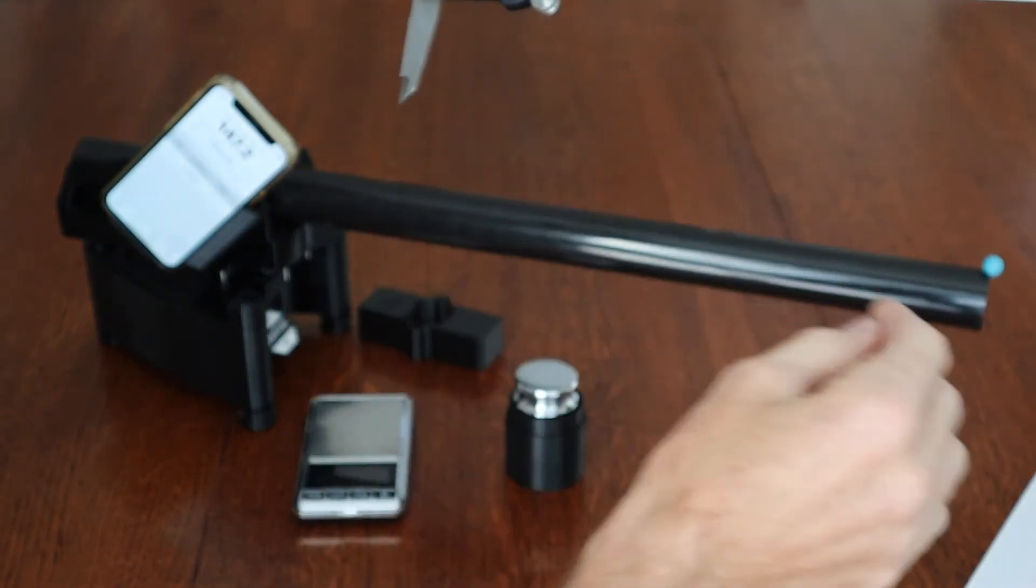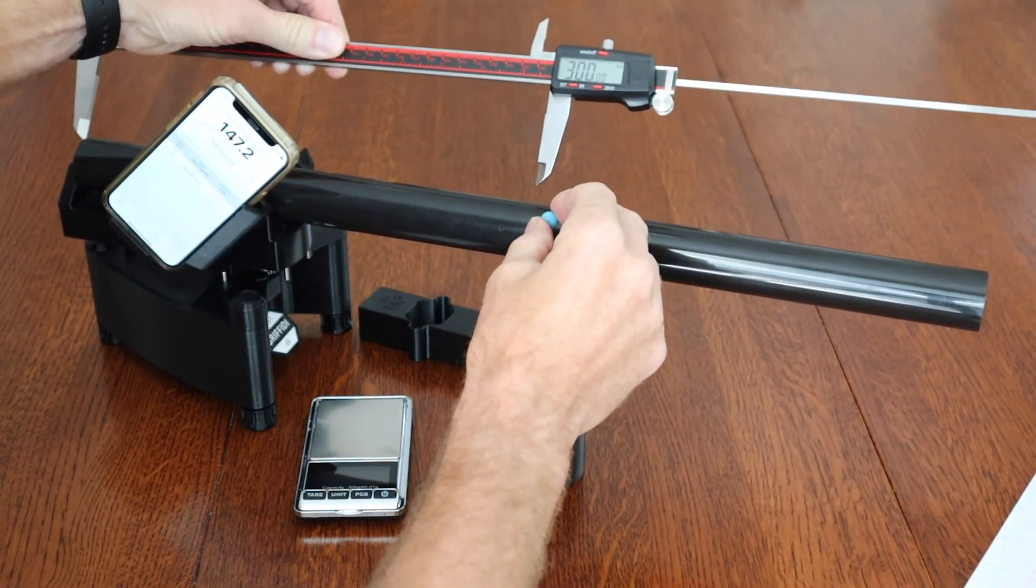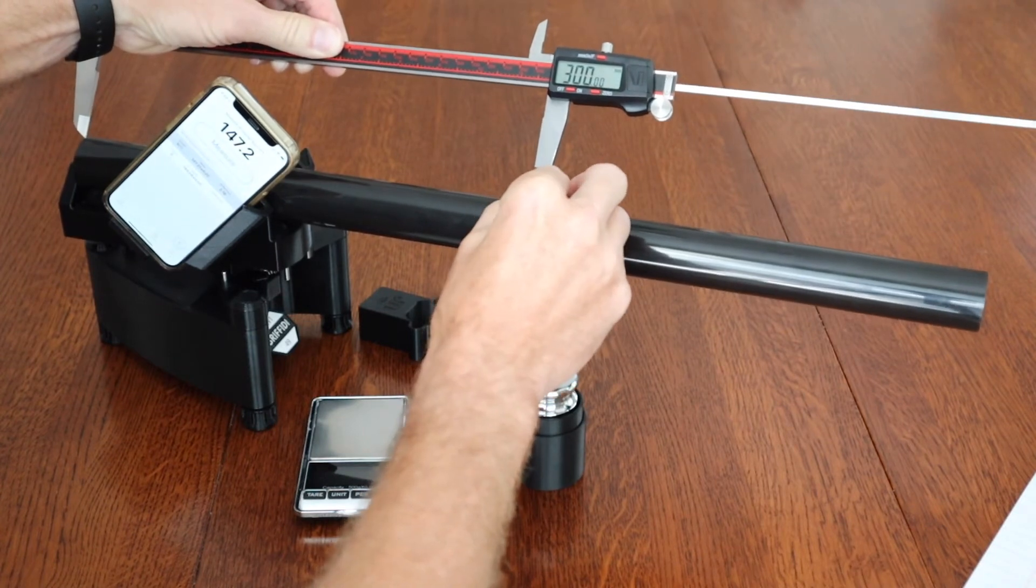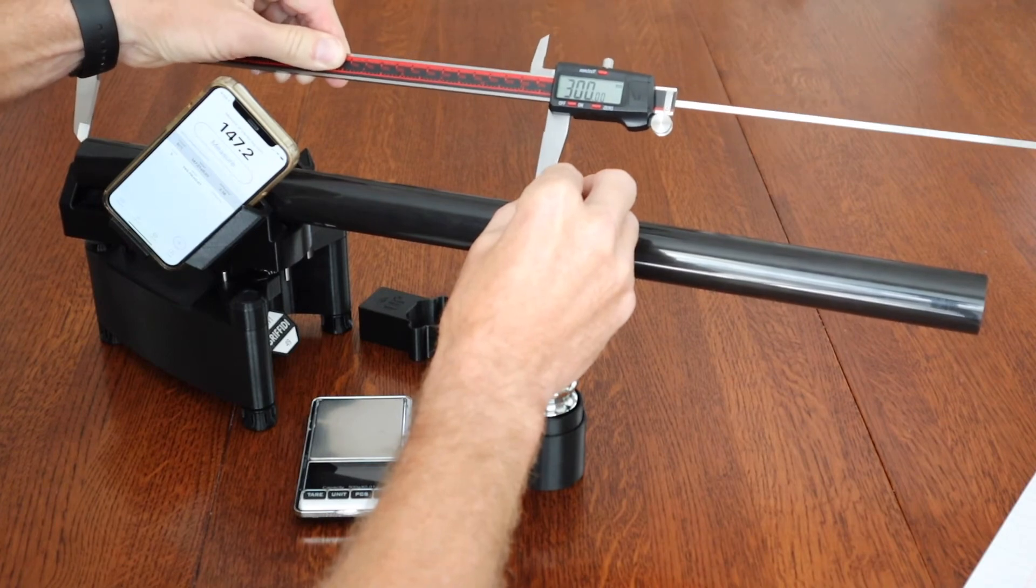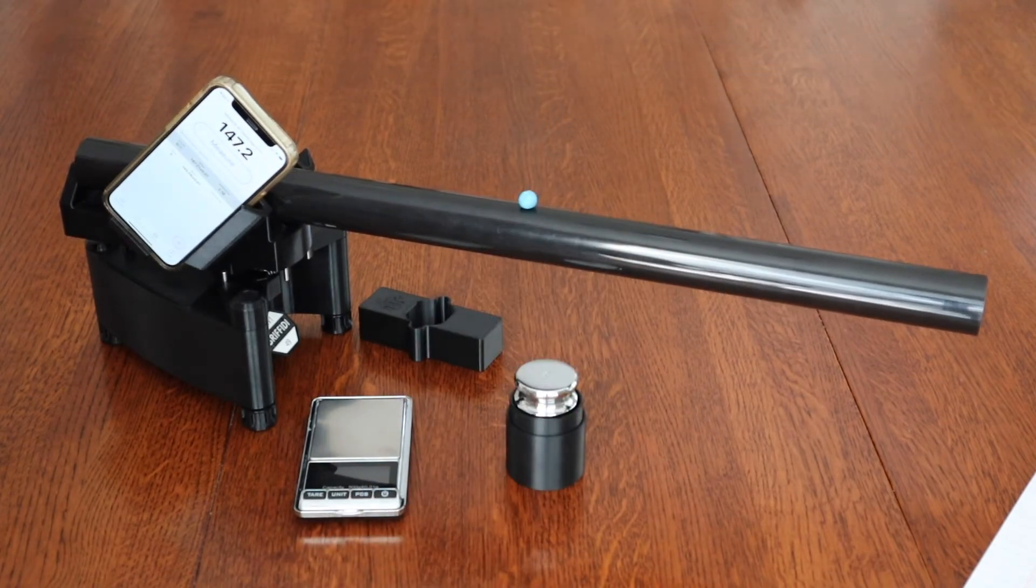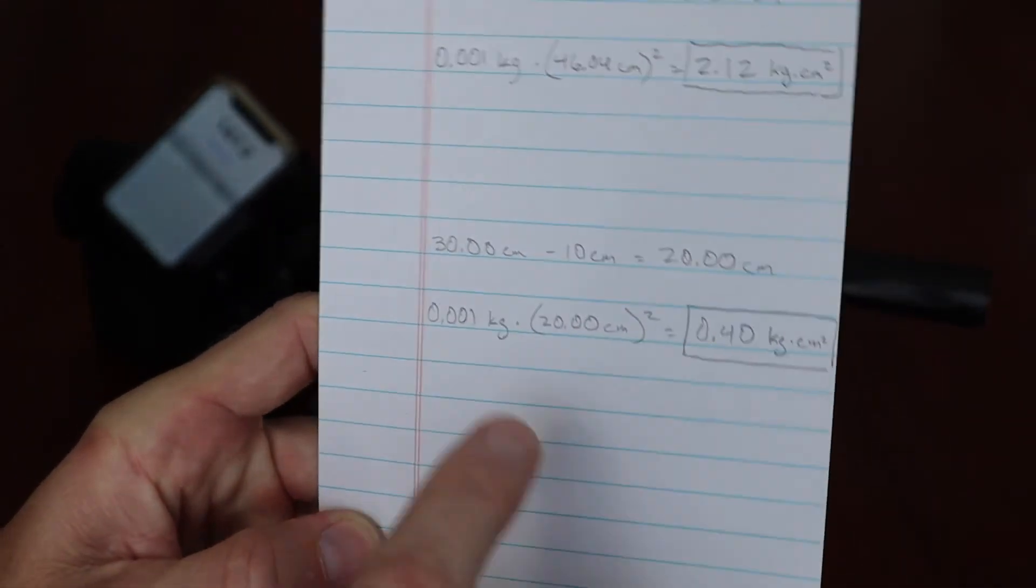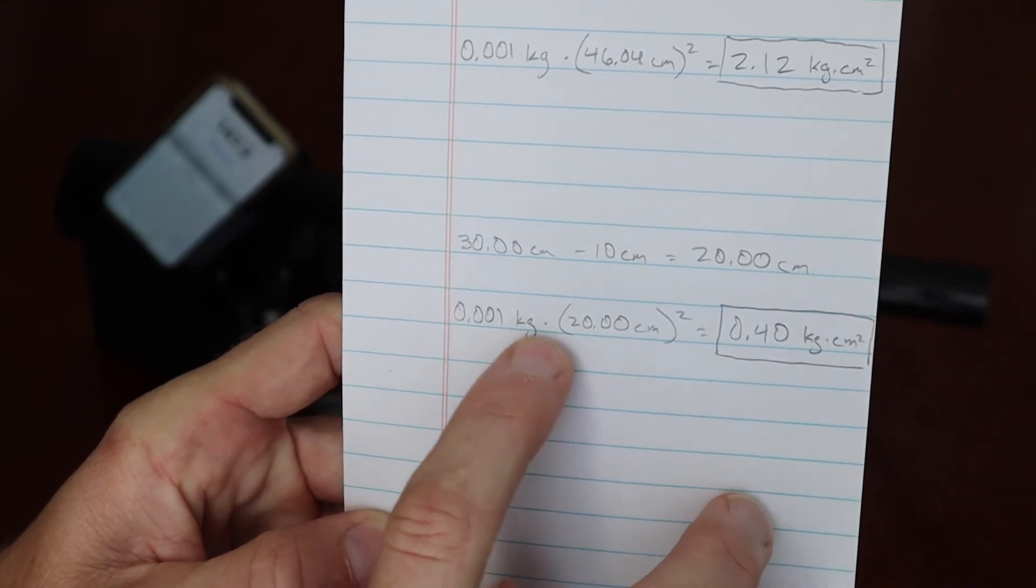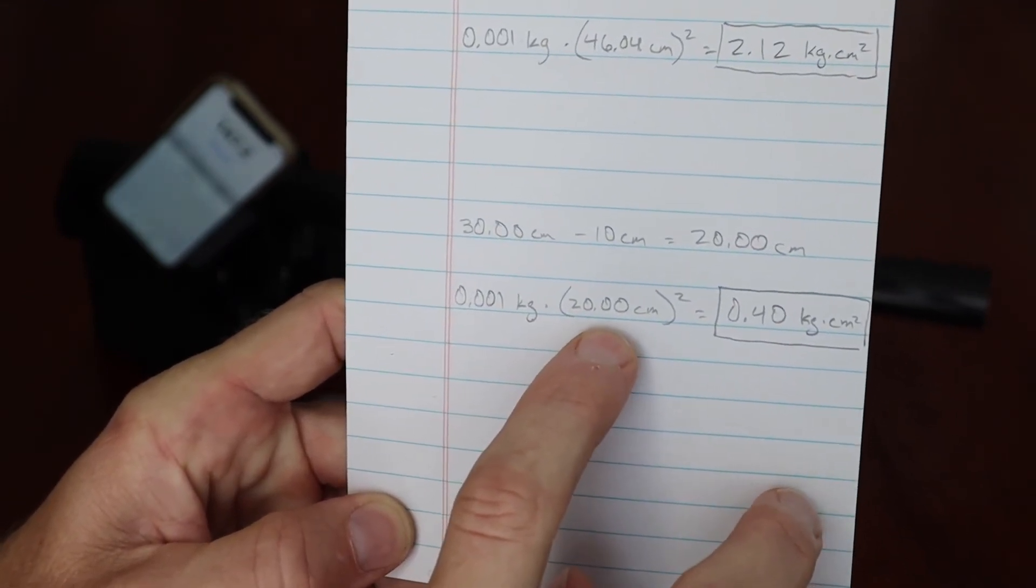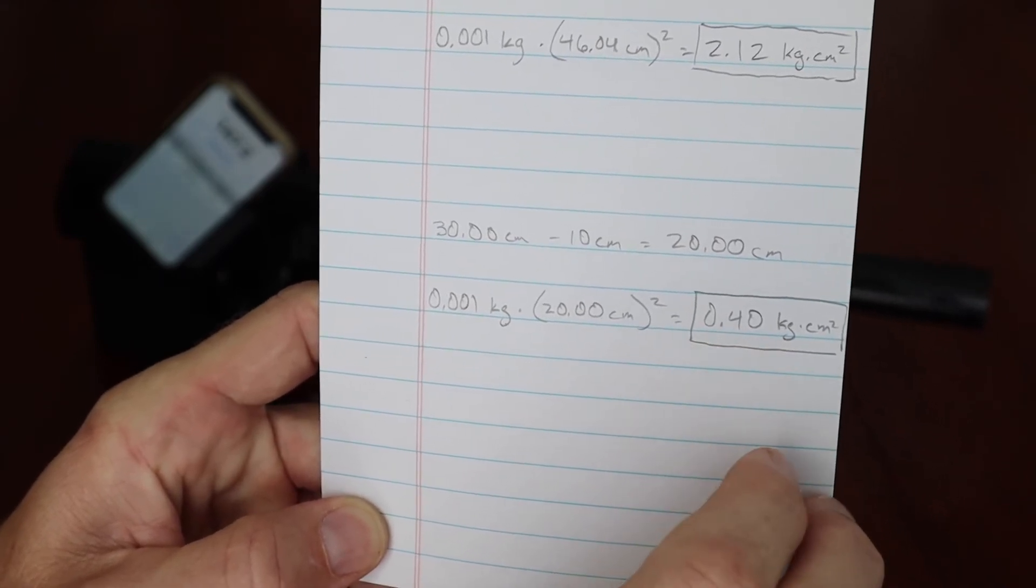And I'm going to move the ball to that point. So I'm going to just take that against the butt and try to get that lined up there. And so this is the second one down here. So that's 30cm minus the 10 is 20, and 1g or 0.001kg times 20cm² is a difference of 0.40 kgcm².